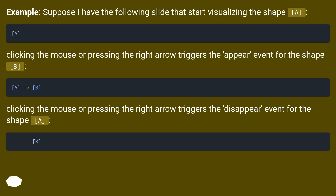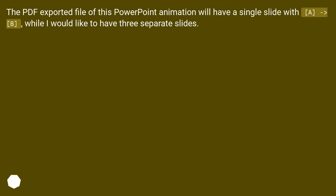For example, suppose I have a slide that starts by visualizing shape A. Clicking the mouse or pressing the right arrow triggers the appear event for shape B. Then clicking again triggers the disappear event for shape A. The PDF exported from this PowerPoint animation will have a single slide with A and B visible, while I would like to have three separate slides.